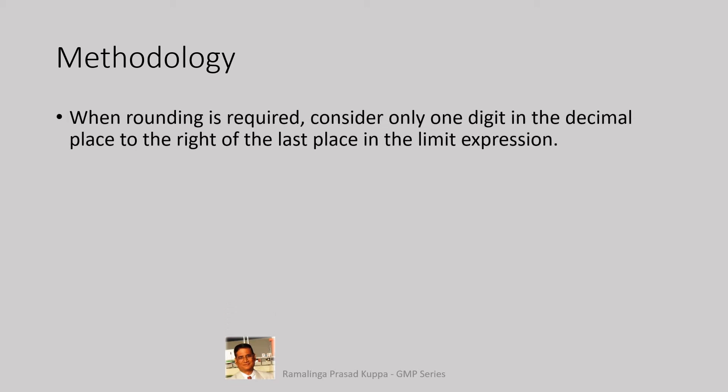Let us see the methodology and requirements for rounding off results. When rounding is required, consider only 1 digit in the decimal place to the right of the last place in the limit expression. This point should be understood well. If there are 2 digits after the decimal point in the specifications, you have to select 1 more digit on the right side next to the 2 specification digits. That means, you have to select total 3 digits after the decimal point. The same principle holds good for any other numbers.